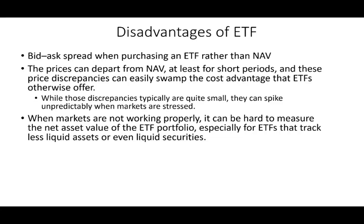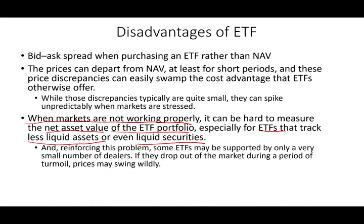You might be tracking 300 or 400 stocks that are moving continuously, and the ETF has to reflect that. So sometimes there's a split second or a minute where it's not tracking 100% what's going on, especially when markets are not working properly — for example, during the flash crash. It can also be hard to measure the net asset value of the ETF portfolio, and sometimes ETFs track less liquid assets, which can cause discrepancies. But again, these are not major issues.